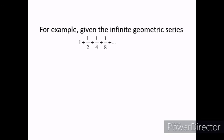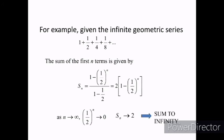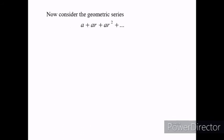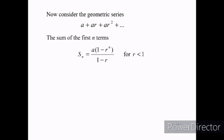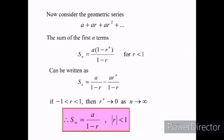Let's consider this example. Given an infinite geometric series, the sum of the first n terms is S(n) = (1 − (1/2)^n) / (1 − 1/2). As n approaches infinity, (1/2)^n approaches 0, so S(n) approaches 2, which is the sum to infinity. More generally, considering the geometric series a + ar + ar² + …, the sum of the first n terms is a(1 − r^n) / (1 − r) for |r| < 1. This can be written as S(n) = a/(1 − r) − ar^n/(1 − r). If −1 < r < 1, then r^n approaches 0 as n approaches infinity. Therefore, the sum to infinity equals a / (1 − r) for |r| < 1.